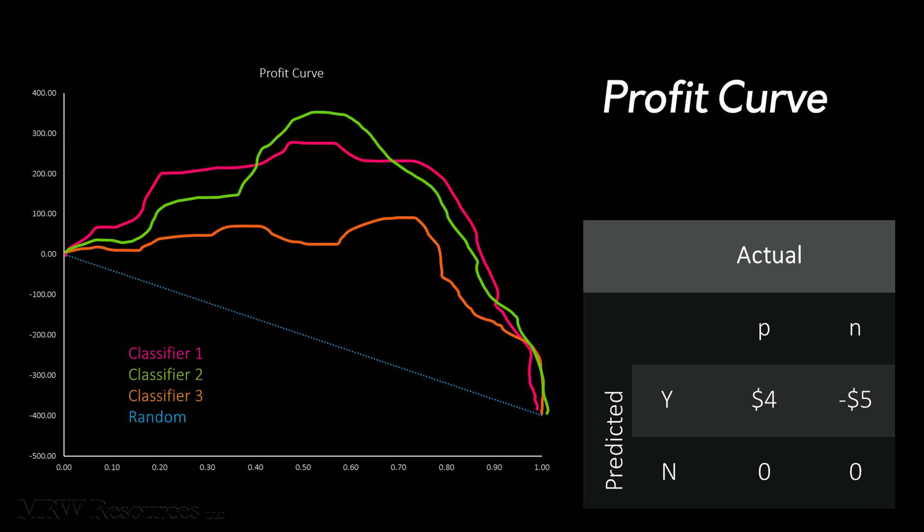The blue line represents a random selection process. As you can see, all three classifiers and the random selection line all begin at the same place and end at the same place. This makes sense,